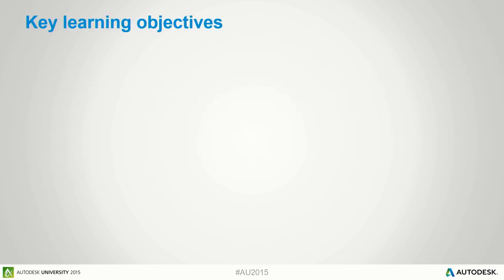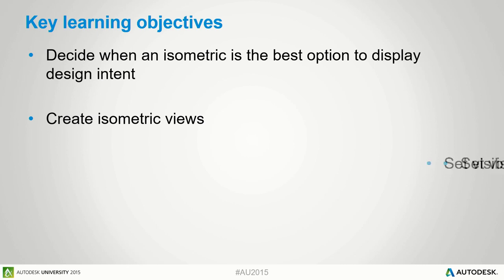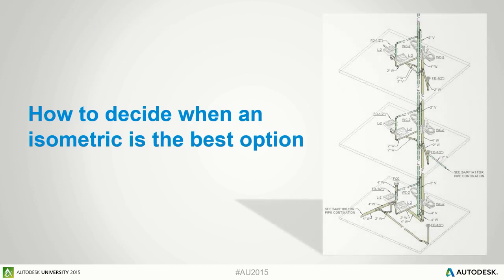Our learning objectives are: deciding when an isometric is the best option to display design intent; going through the process of creating isometric views; setting visibility graphics to display only what you want to display; and finishing out by tagging those views to get all the information usable to a contractor or code reviewer.